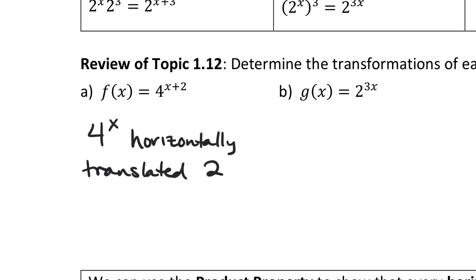We've horizontally translated it 2 units in a direction. Which direction if you see plus 2 on the inside? To the left — because inside is opposite. Even though plus normally looks like a positive or right direction, it's the opposite for insides. Horizontal inside opposites.